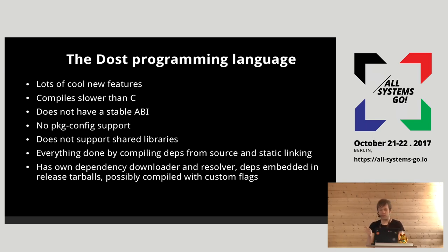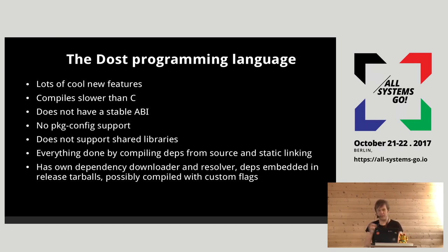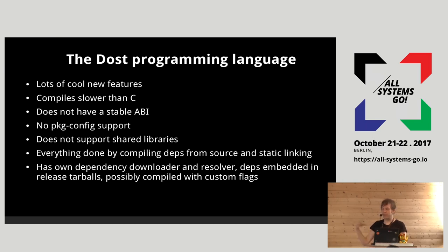DOST doesn't have a stable ABI. It doesn't support pkg-config nor shared libraries. Everything you do is compile everything from source — all your dependencies at once — and create one statically linked object. It has its own dependency downloader and resolver built in. All your dependencies are inside your tarball and compiled possibly with your own compiler flags, which are not the same as for everyone else using it.